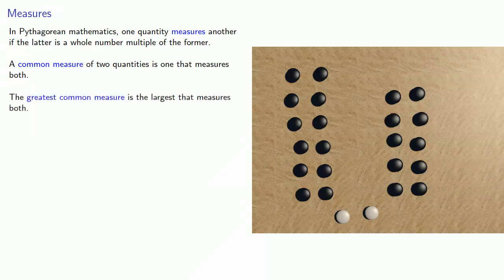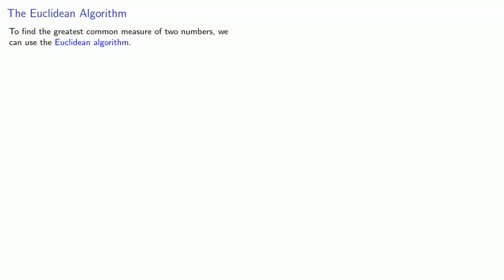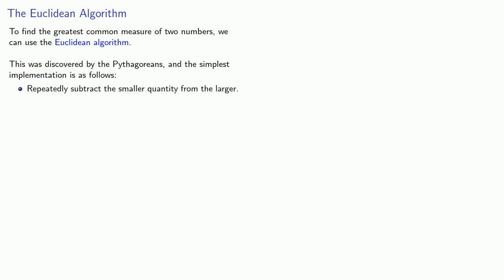The greatest common measure is the largest that measures both quantities. To find the greatest common measure of two numbers, we can use the Euclidean algorithm. This was actually discovered by the Pythagoreans, and the simplest implementation is as follows: repeatedly subtract the smaller quantity from the larger, and the last amount subtracted is the greatest common measure.